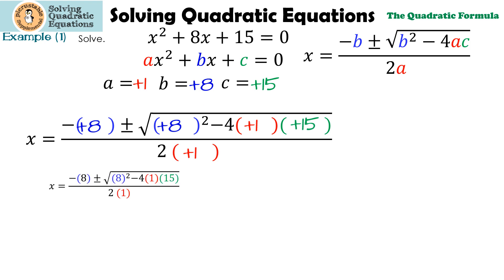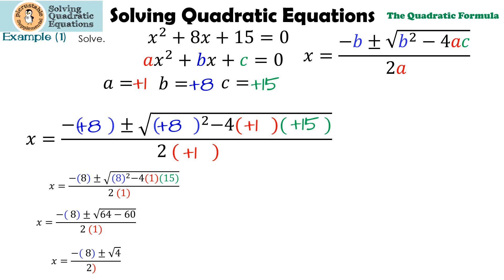I just rewrote it so it's easier to see. The next step is to simplify. 8 squared is 64; 4 times 1 times 15 is 60, so we'll have 64 minus 60. 64 minus 60 is 4, and 2 times 1 is 2. Negative 8 is just negative 8, so now we have negative 8 plus or minus the square root of 4 over 2. The square root of 4 is 2.